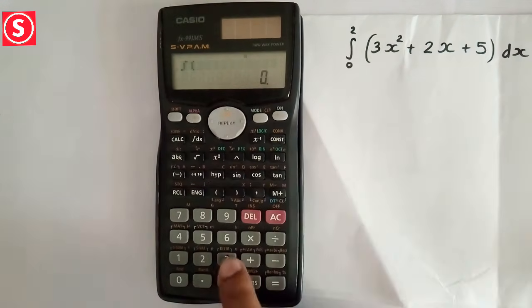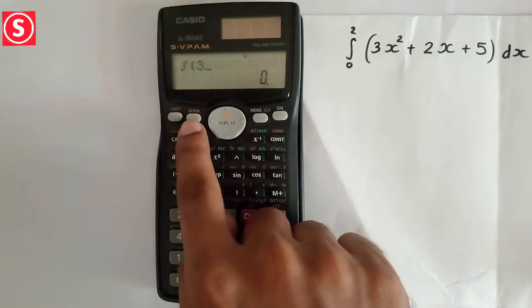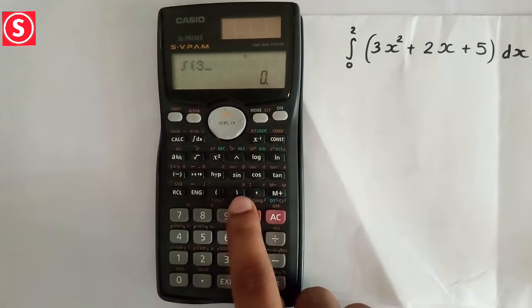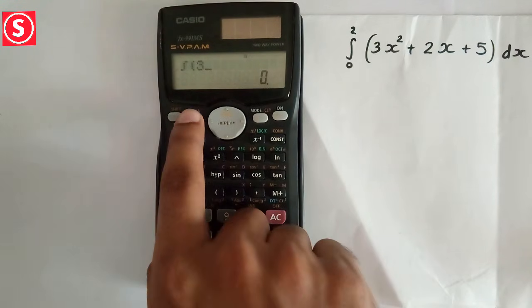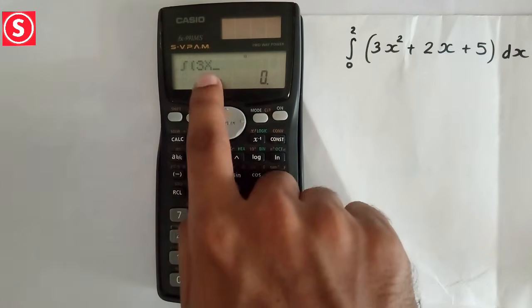Now do the question. 3x². For putting x square, press on the alpha button then on the closing bracket button, because above the closing bracket button we can see the letter x. So press alpha then press the closing bracket button. Now the letter x will come here.